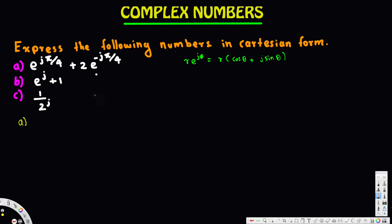Let's look at this problem. The question is asking us to express the following numbers in Cartesian form. We have two numbers in polar form, so we have to do them one by one. We have to use Euler's identity to convert them into this pattern, then find the Cartesian or rectangular form.